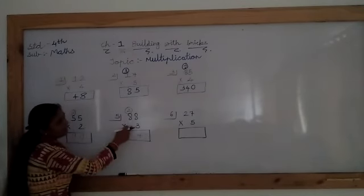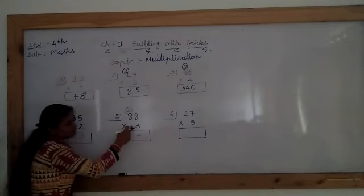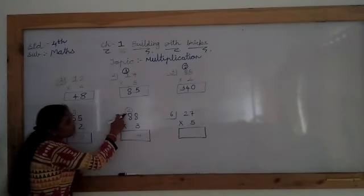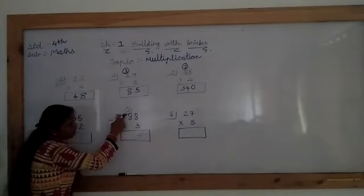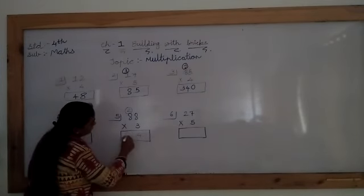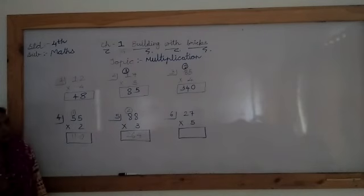Again here, 8 threes up? Yes, 24. In 24, we have to carry 2 more. So after 24, 25, 26. Here the answer is 264.